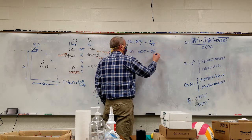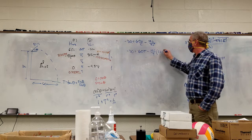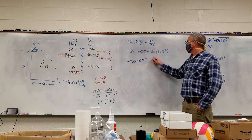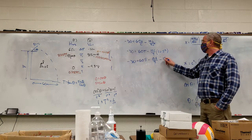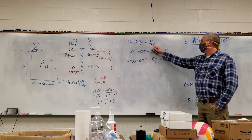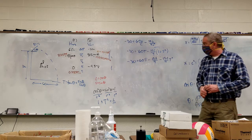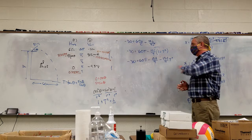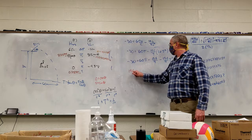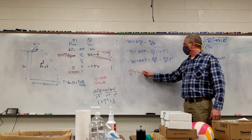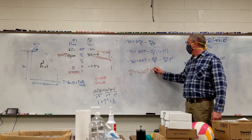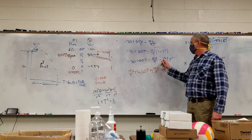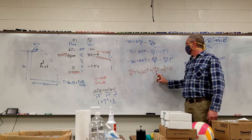Distributing: −30 = 60T − 19.6/9 − (19.6/9)T². Rearranging into quadratic form by moving everything to the left side: (19.6/9)T² − 60T + (19.6/9 − 30) = 0. Converting: 19.6/9 ≈ 2.1̄7̄, and 2.1̄7̄ − 30 = −27.8̄2̄. So we have approximately 2.1̄7̄ T² − 60T − 27.8̄2̄ = 0.